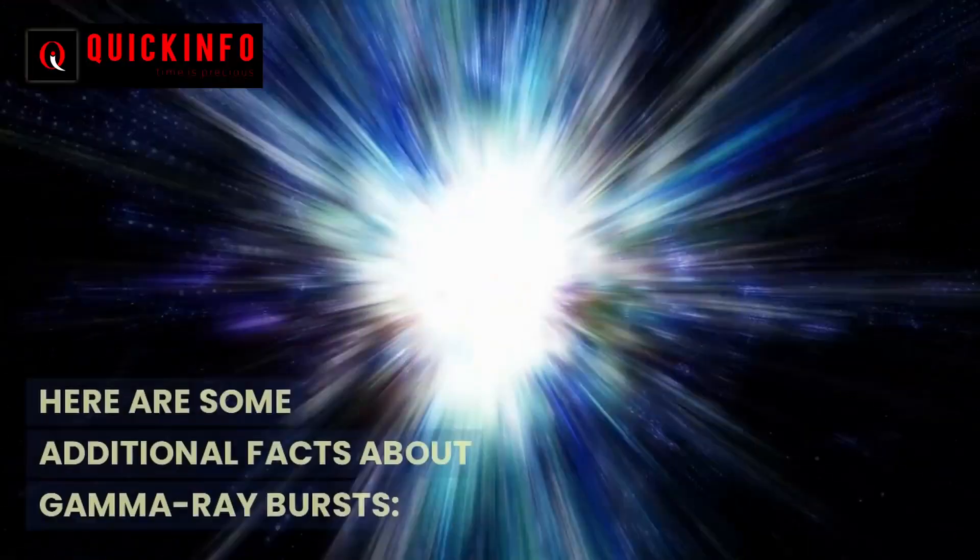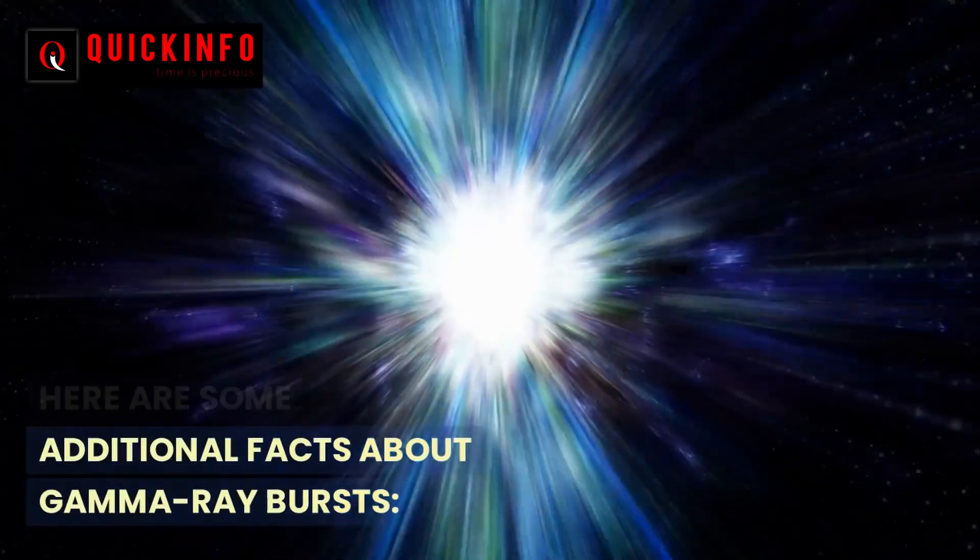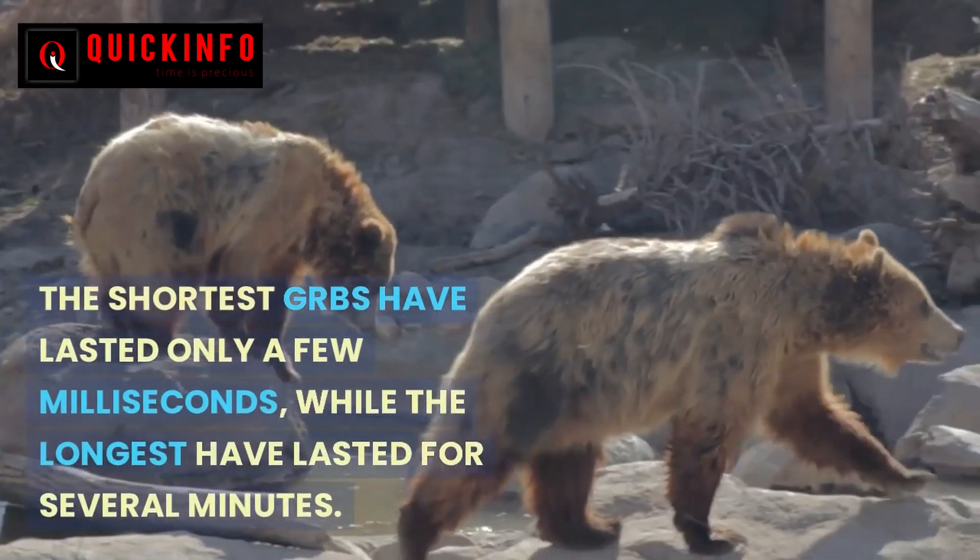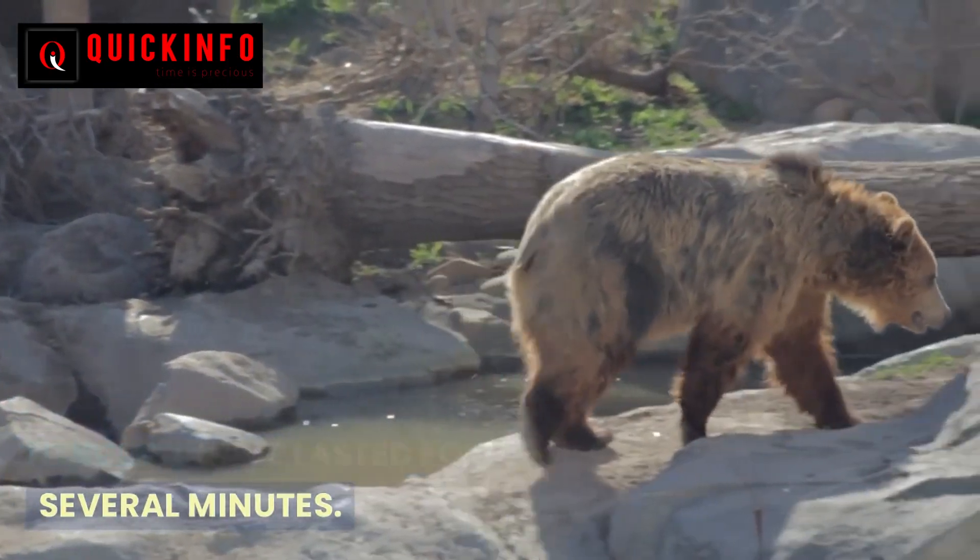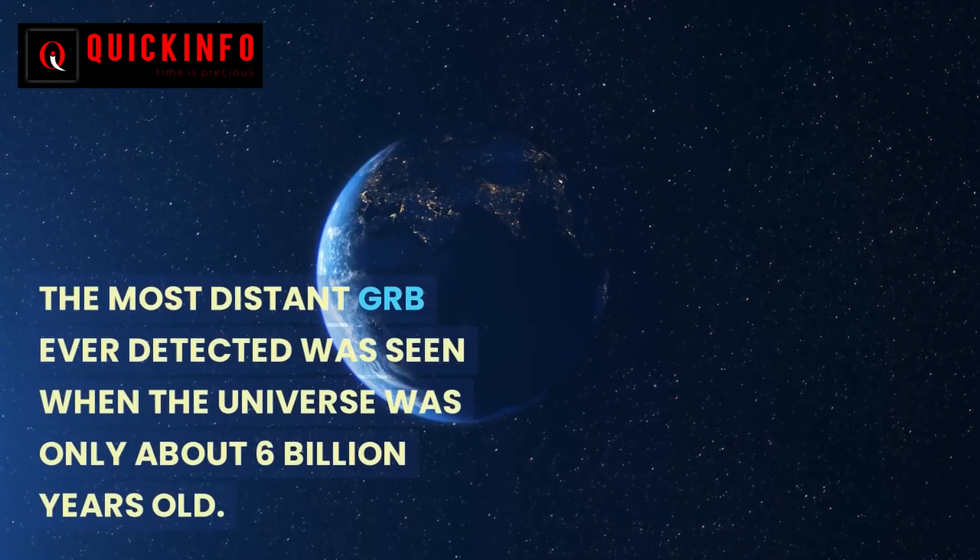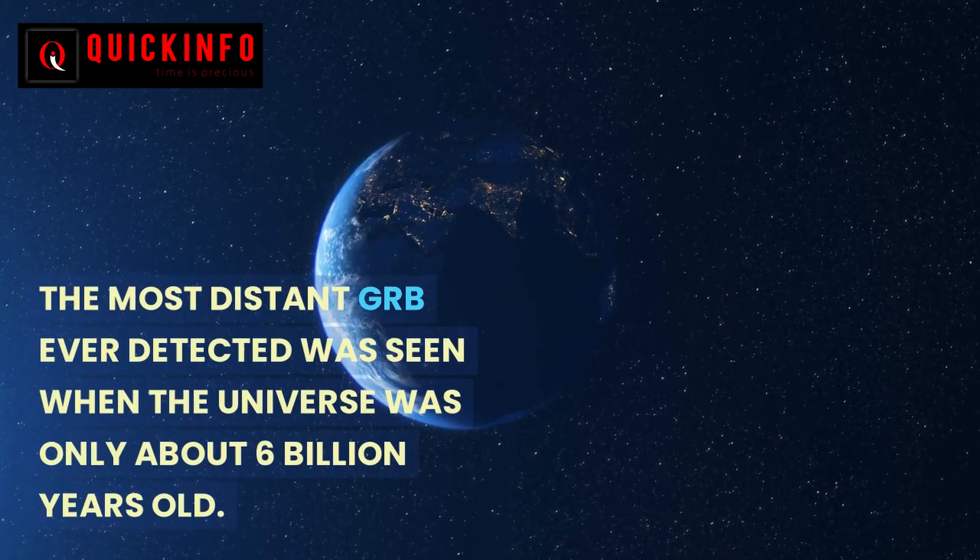Here are some additional facts about gamma ray bursts. The shortest GRBs have lasted only a few milliseconds, while the longest have lasted for several minutes. The most distant GRB ever detected was seen when the universe was only about 6 billion years old.